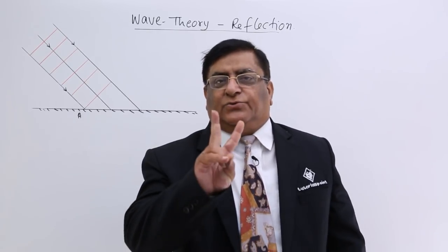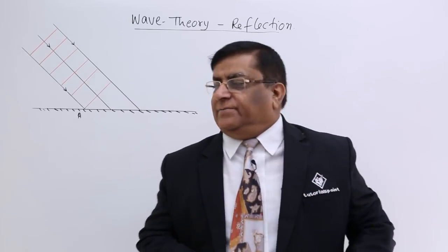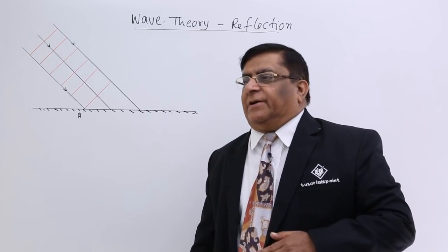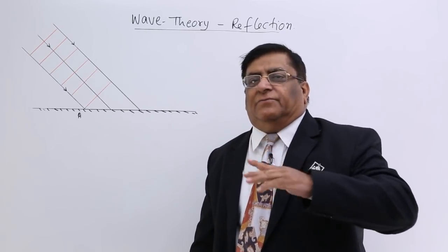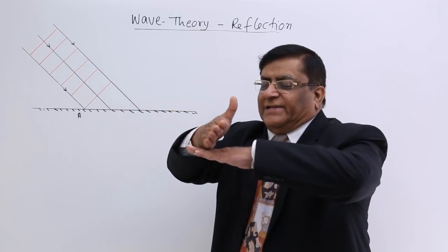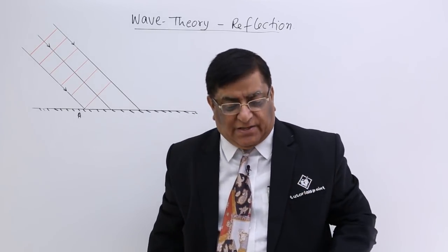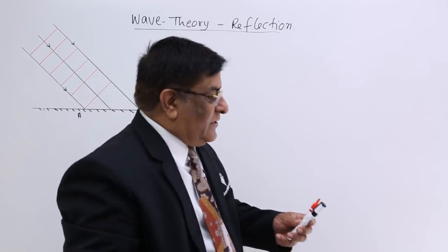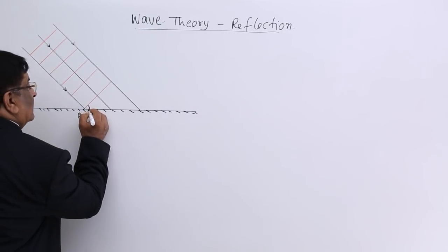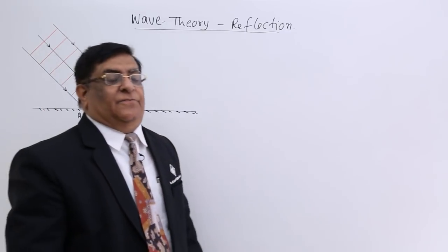There are two surfaces. One is the surface of interaction — this mirror — and there is another surface of the wavefront which is coming and striking it. So the angle of incidence is the angle between the two surfaces — the surface of the wavefront and the surface of the mirror.